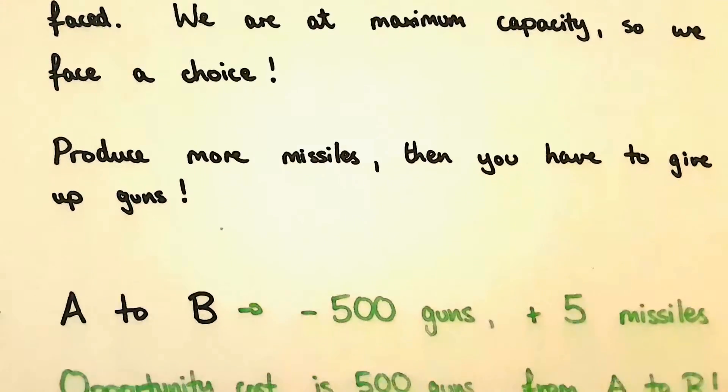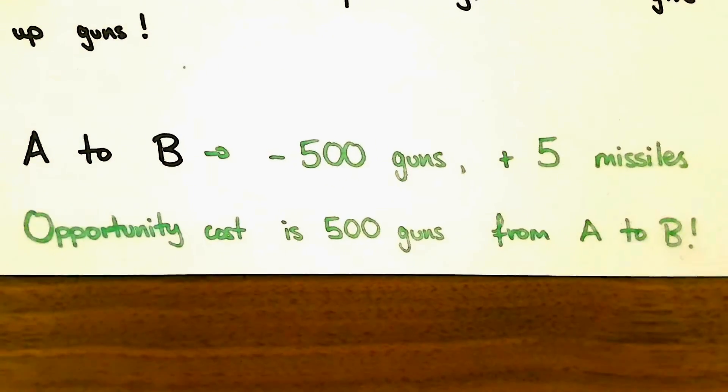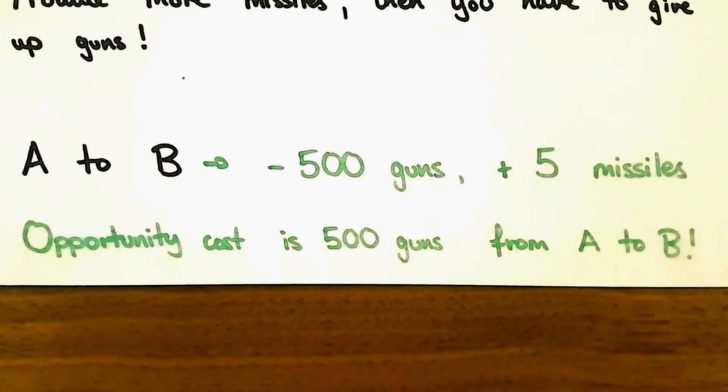Notice that the opportunity cost will be constant at all points of the diagram. This is because the curve is perfectly straight.